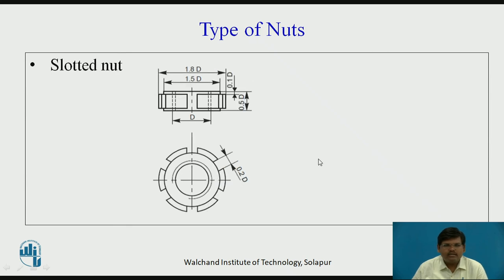Next we have slotted nut. Slotted nut is a ring-like structure with serrations at the top surface, as seen on the screen. Regular spanners cannot be used to turn this kind of nut. These nuts are used where regular spanners are very difficult to operate, so special types of spanners are used.